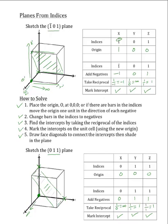All that's left to do is shade in the plane, and you should see it begin to take shape. And there you have it — that is how to draw the 0, 1, 1 plane. If you have any further questions, make sure to visit our YouTube channel, Materials Concepts. Thanks for watching!